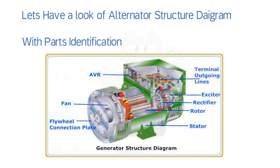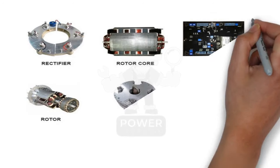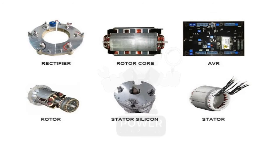As you see, the first item is the AVR, which is called the Automatic Voltage Regulator. The second is the terminal outgoing lines, where we connect our power cables which give us output. After that it shows the exciter, rectifier, main rotor, stator, flywheel, connection plate, and fan. These are some of the major parts which you should know before going further into the video.